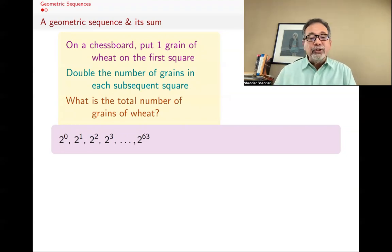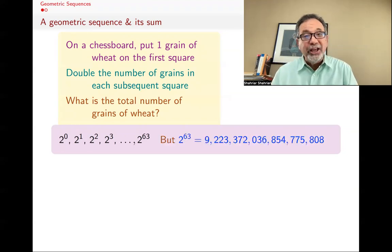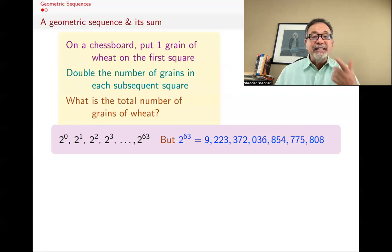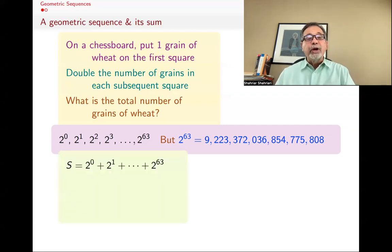Now, the point is that 2^63 is actually a huge number, and the prince was actually very surprised when his people came and told him how much grain this is. In fact, the chess inventor has asked for the sum of these, wanted 2^0 + 2^1 + 2^2 all the way to 63.